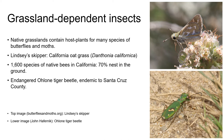An example of a grassland dependent butterfly is the Lindsay's Skipper, pictured here on the upper right, which uses California oat grass, Danthonia californica, as its host plant. California oat grass is an important component of north coastal prairie, including right here in Santa Cruz County.